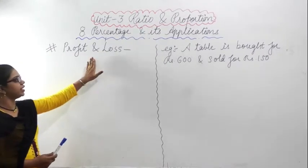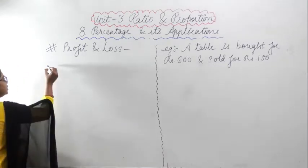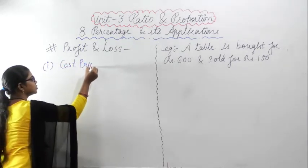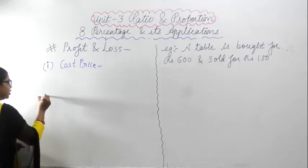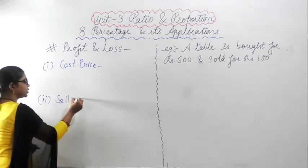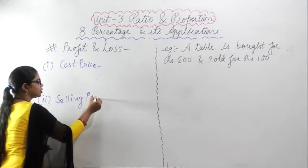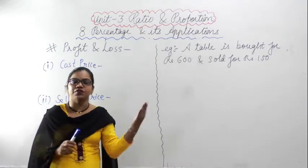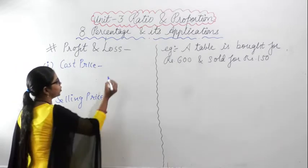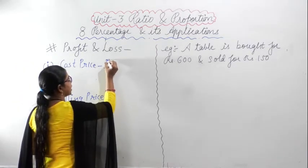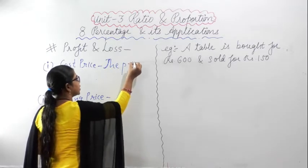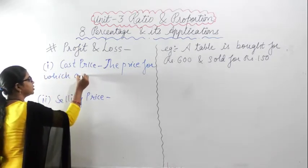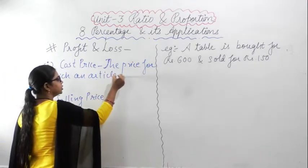The second topic is profit and loss. Here in this topic, first we will study the term cost price, and the second term is selling price. Cost price means the price for which an article is bought.